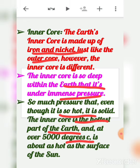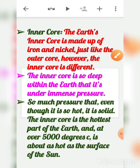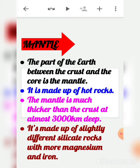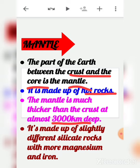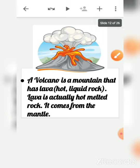The inner core is the hottest part of the earth, at over 5000 degrees Celsius — about as hot as the surface of the sun. The part of the earth between the crust and the core is the mantle. It is made up of hot rocks, is much thicker than the crust at almost 3000 km deep, and consists of silicate rocks with more magnesium and iron. The lava that comes from volcanoes is actually hot melted rock that comes from the mantle.